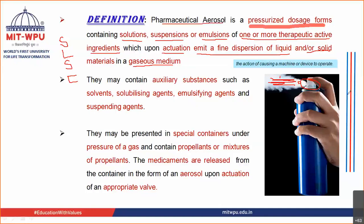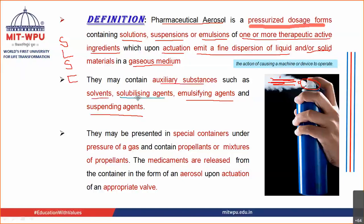Aerosols may also contain auxiliary substances — these are excipients such as solvents, solubilizing agents, emulsifying agents, or suspending agents. Along with the active ingredient, other ingredients are present depending on the formulation: solvents or solubilizing agents for solutions, emulsifying agents for emulsions, or suspending agents for suspensions.